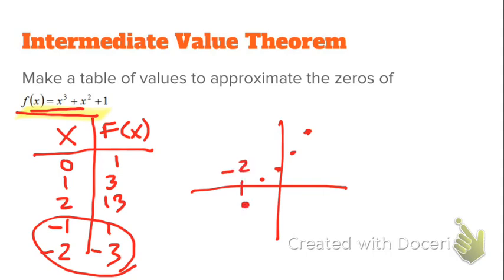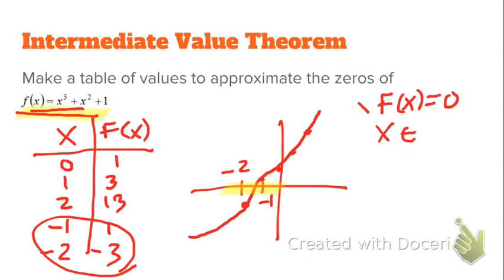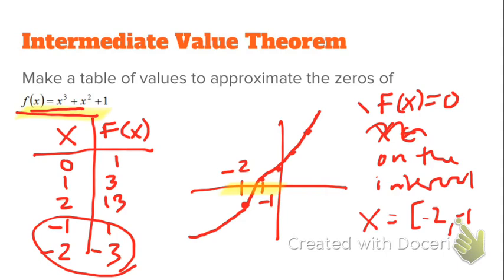So here is negative 2 giving a negative value, and here is negative 1 giving a positive value. Since the function has to be continuous and has to be a function, it had to cross the x-axis on the interval between negative 2 and negative 1. This method doesn't tell me exactly what the zero is, but if I keep plugging in numbers on that interval, I could approximate it more closely. All this tells me is that there is a zero — f of x equals zero somewhere on the interval from negative 2 to negative 1.